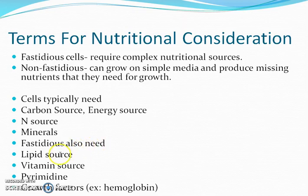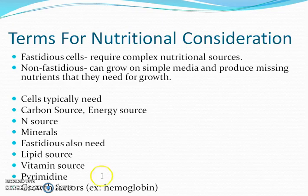Fastidious organisms might also need a lipid source, as they may not be able to produce all of their own lipids for their membrane. They may need a vitamin source, requiring other organisms to produce some vitamins for them. Some organisms are known not to be able to produce their own pyrimidine molecules. And growth factors — such as hemoglobin, enzymes, hormones, and other things — can also be involved.